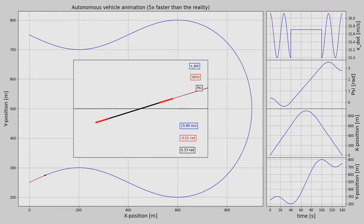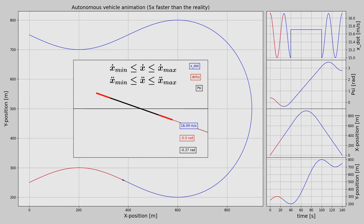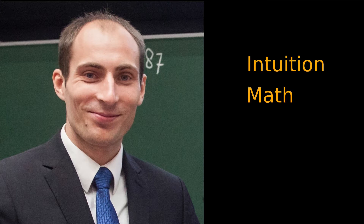How do you make a car track a general trajectory on a 2D plane, and how do you make sure that the car's velocities, accelerations, and steering wheel angles stay within their realistic values? My name is Mark, I'm an aerospace and robotics engineer, and in this course I will give you intuition, math, and Python implementation for all that.